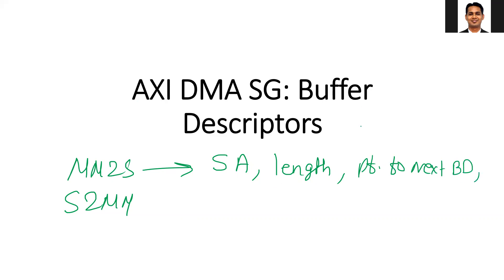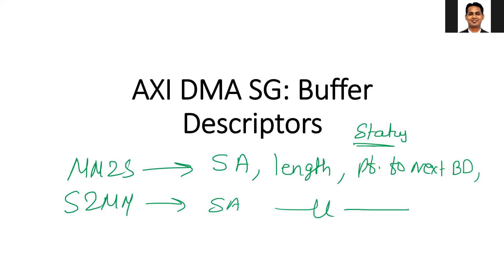The buffer descriptor also tells about its status — whether it is in the free state, pre-processed state, hardware state, or post-processed state. So the key information in a buffer descriptor includes the starting address, length, pointer to the next descriptor, and status. The same information is present in the S2MM buffer descriptor as well. By reading the buffer descriptor, the DMA will know what kind of transfer and what size of transfer it needs to perform.